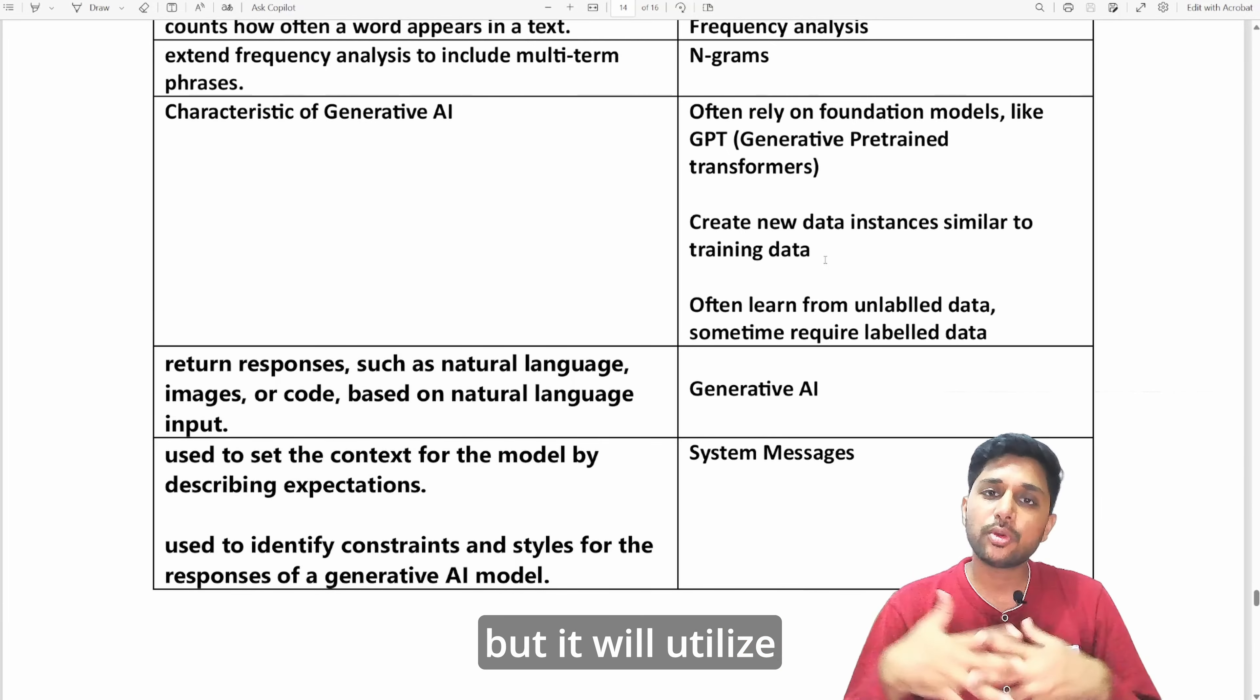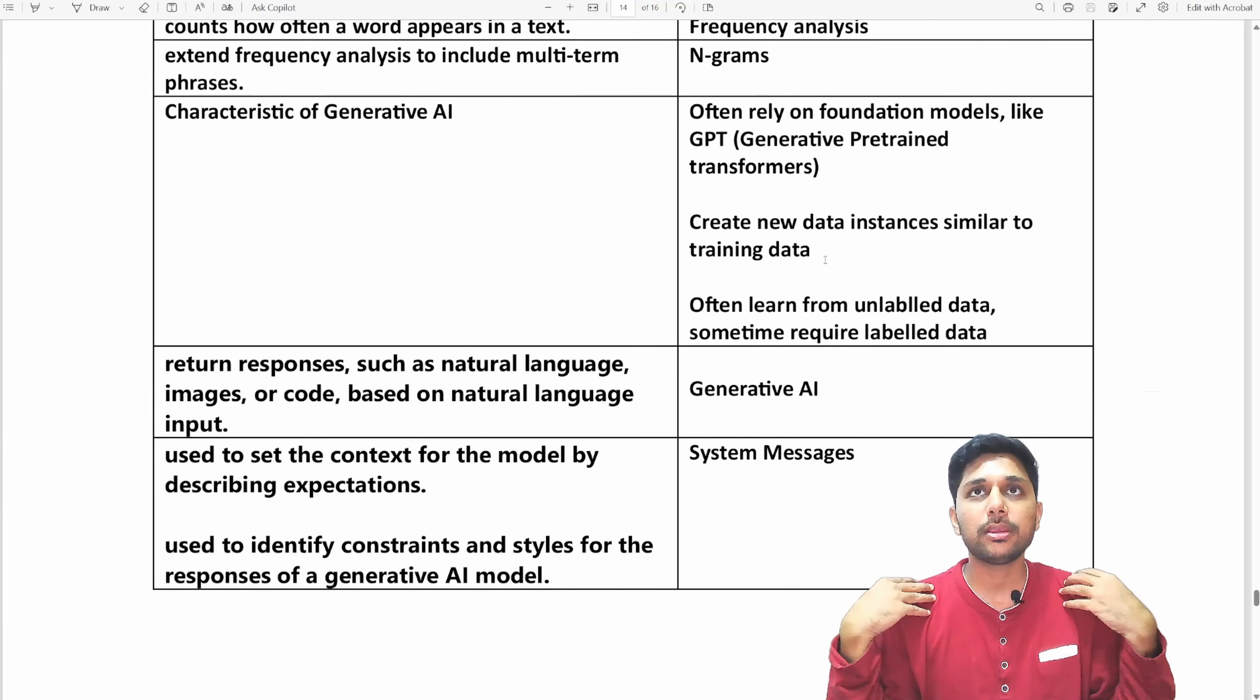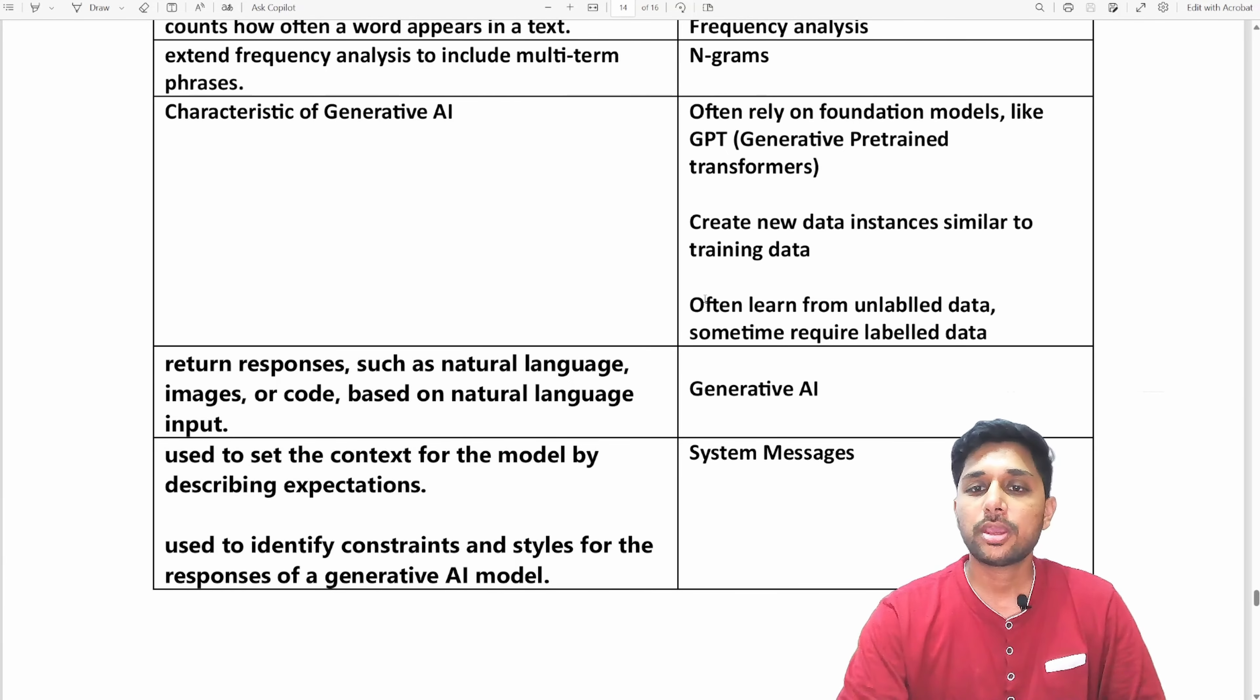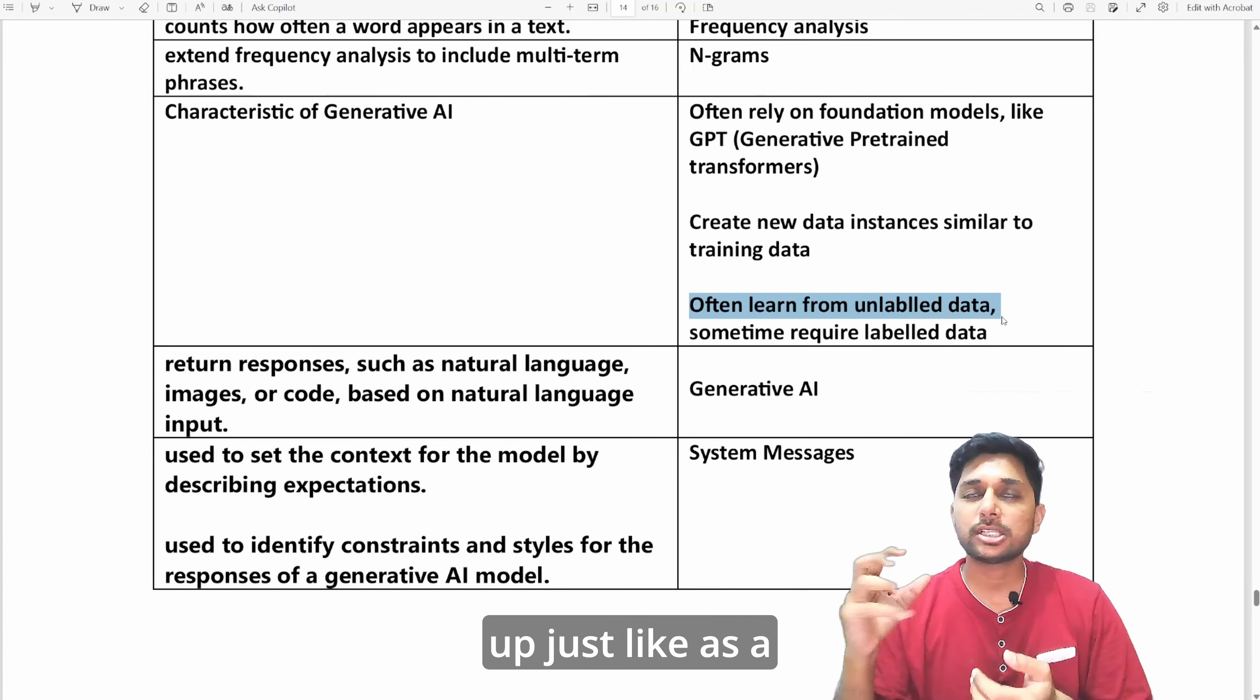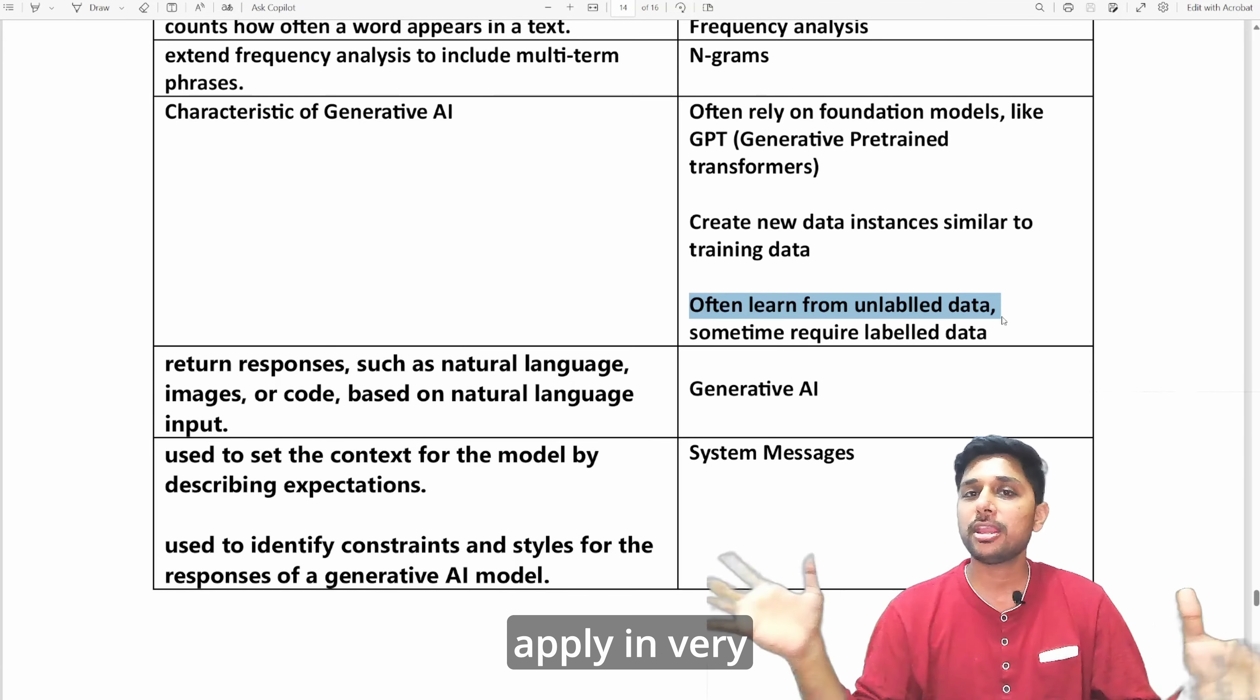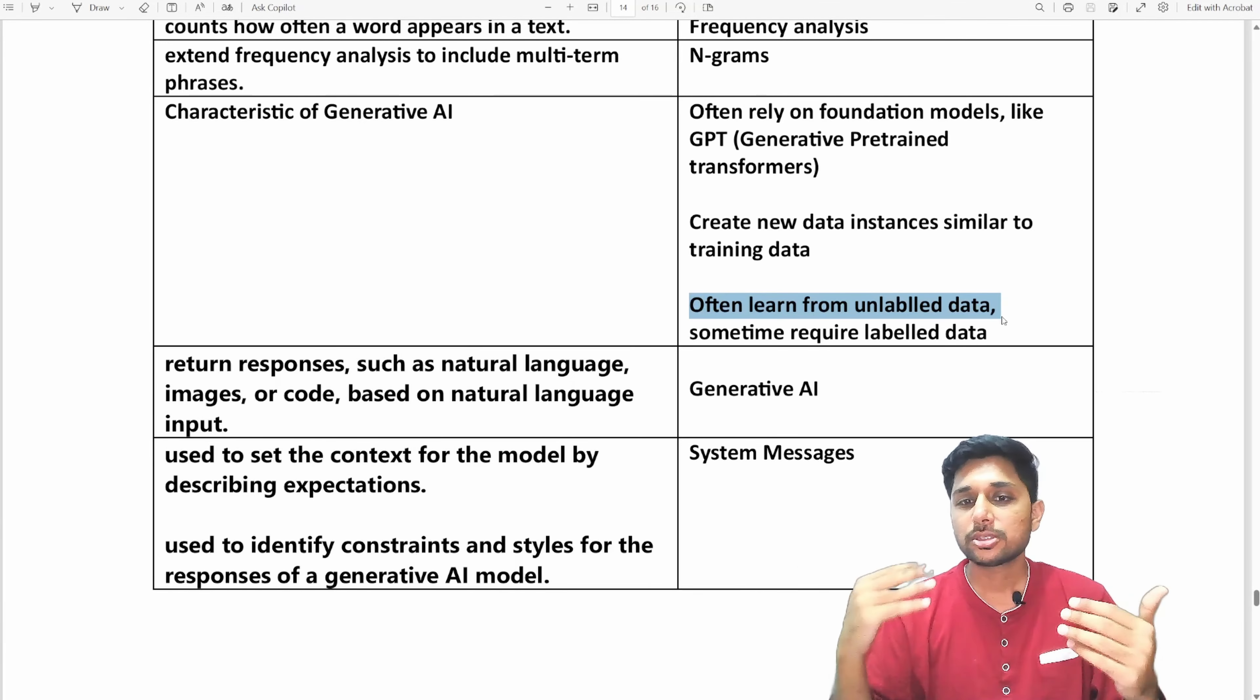It will utilize that just like we as human beings generate new ideas and new thoughts, so it is a similar kind of process that generative AI follows. It often learns from unlabeled data, meaning it can pick up things unconsciously, just like we learn from things we don't even know about but we pick that idea from different parts.